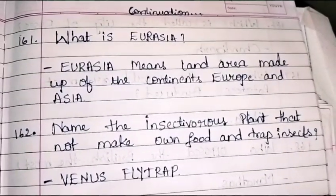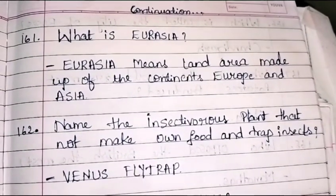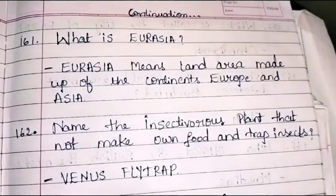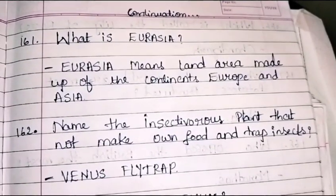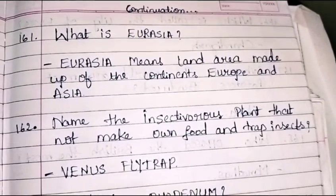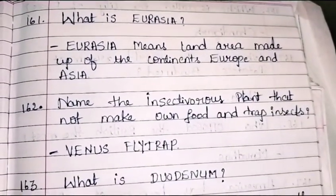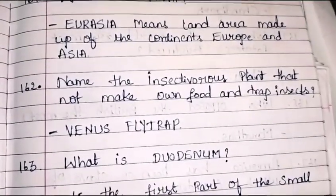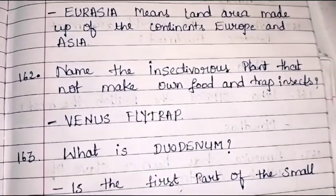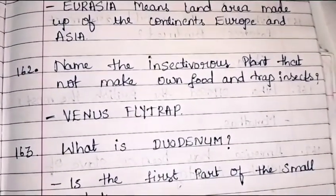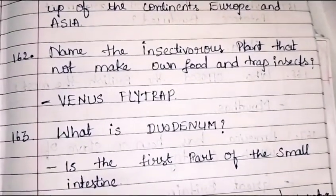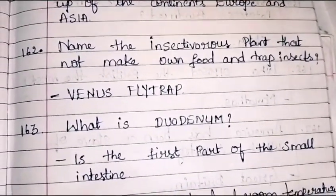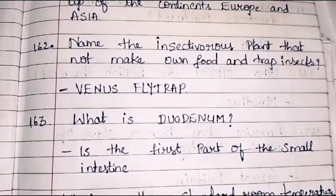Name the insectivorous plant that does not make its own food and traps insects. The answer is Venus flytrap. It is the insectivorous plant which does not prepare its own food.